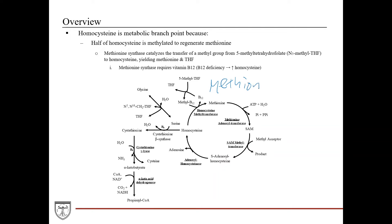Methionine synthase is labeled in the diagram as homocysteine methyltransferase — these are the same enzyme with two names. What happens is it transfers a methyl group from 5-methyltetrahydrofolate to the B12 component of the enzyme. So methionine synthase uses B12 as a cofactor, bound to the structure of the enzyme, and transfers that methyl group from 5-methyltetrahydrofolate to that B12 component.